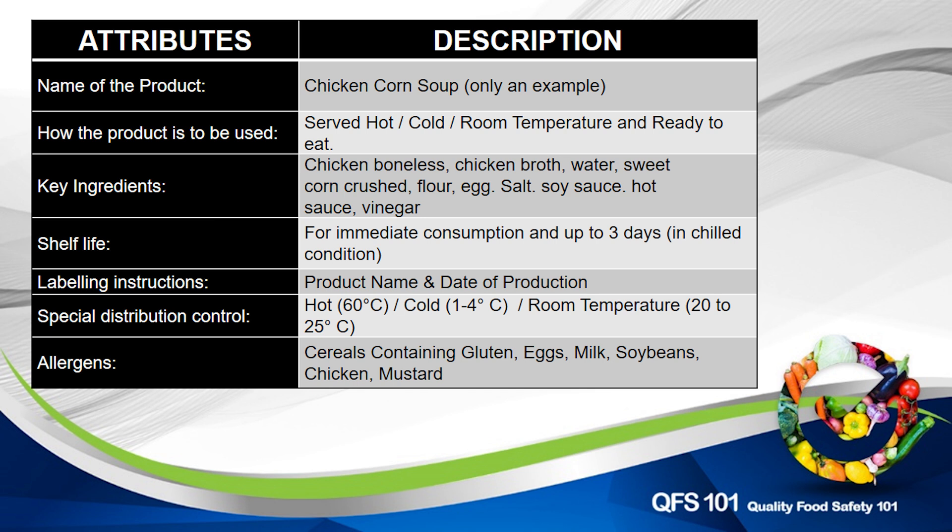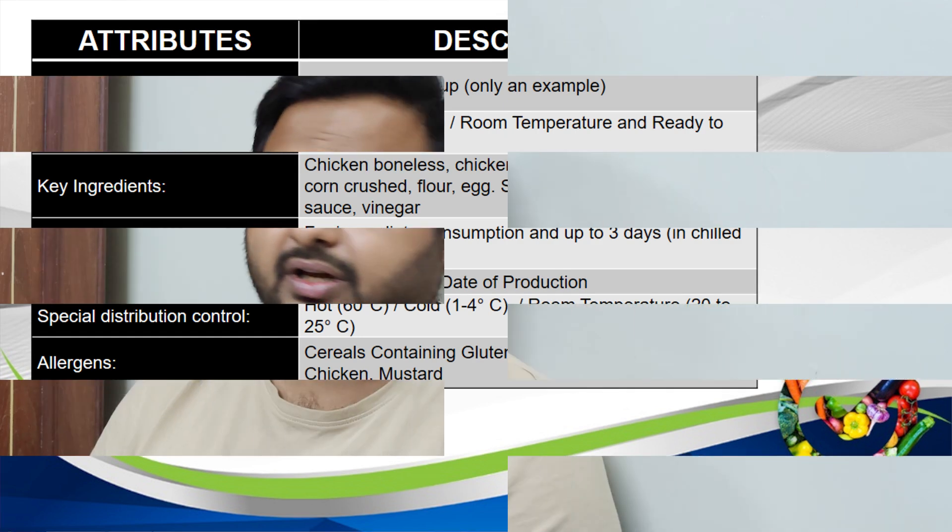In this format, you can see that you need to describe the product. You need to give basic information about the product with regard to product shelf life, product storage conditions, distribution conditions, key ingredients, allergens — all this information should be here. If you are working in a manufacturing company that has a limited number of products being manufactured in the unit, you can make a single product description for each of them.